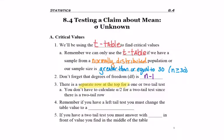And on the t-table, there is a separate row at the top for a one or two-tail test. This means that when calculating your hypothesis test, you do not need to calculate alpha over 2 for a two-tail test, since there's an actual row for that.